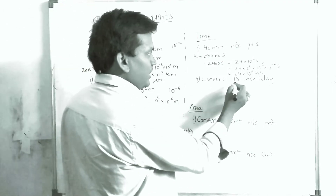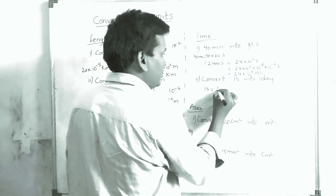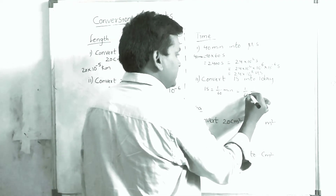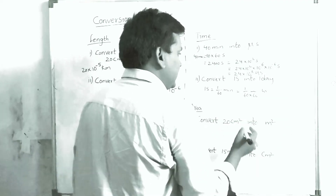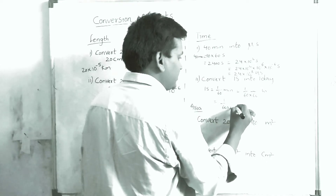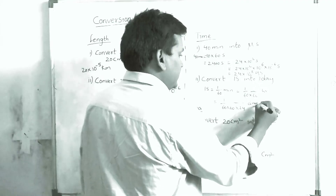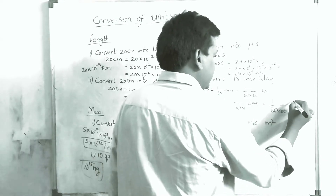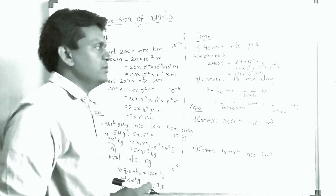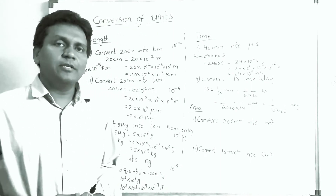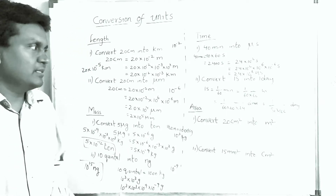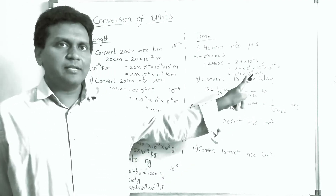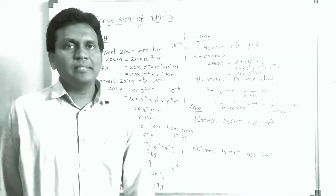Now, convert 1 second into days. 1 second = 1/60 minute = 1/(60 × 60) hour = 1/(60 × 60 × 24) day. That gives 1/86,400 day. So 1 second equals 1/86,400 of a day, meaning there are 86,400 seconds per day.